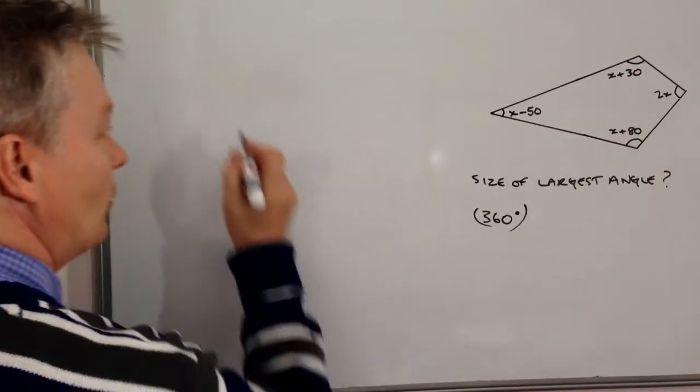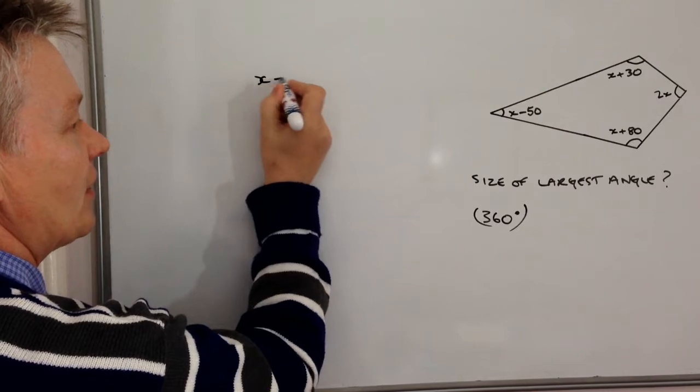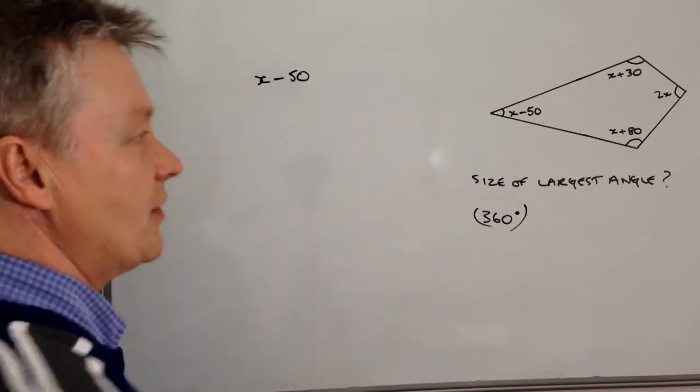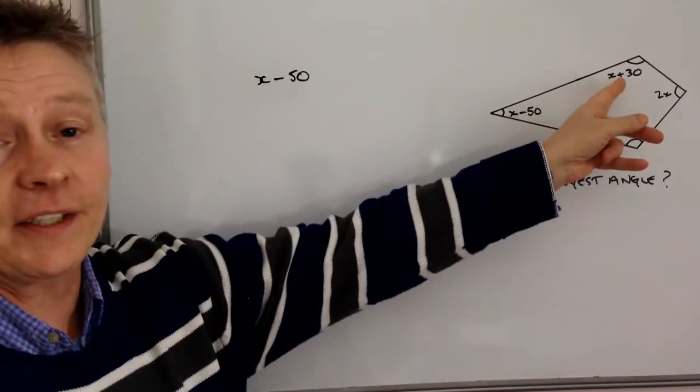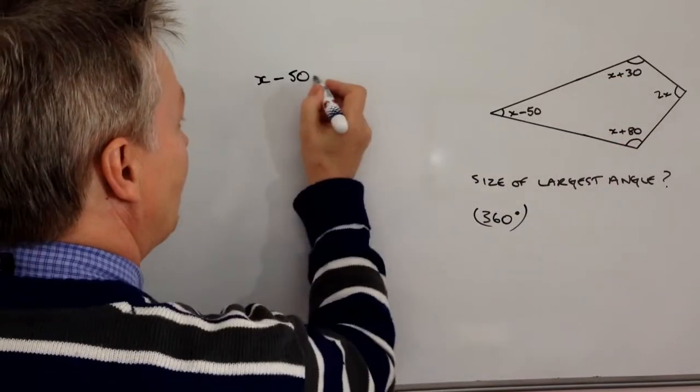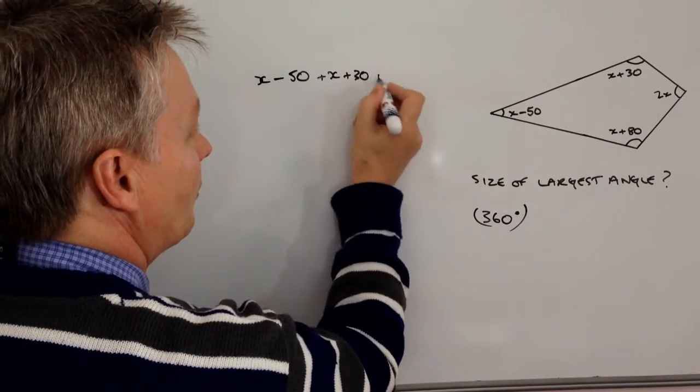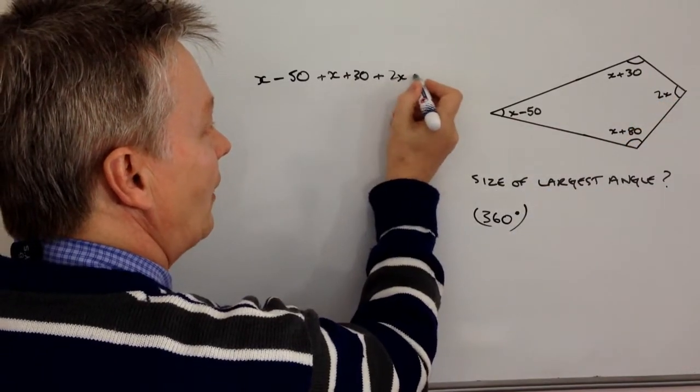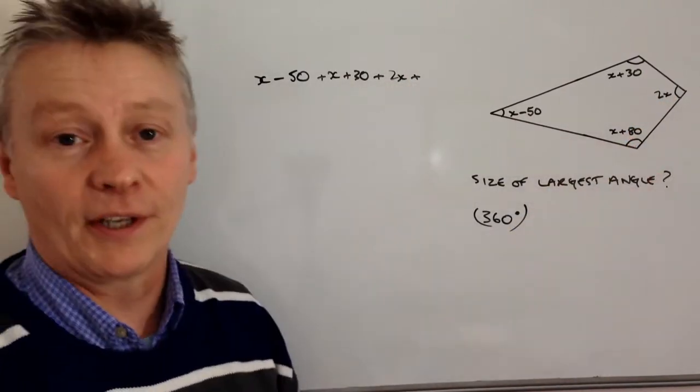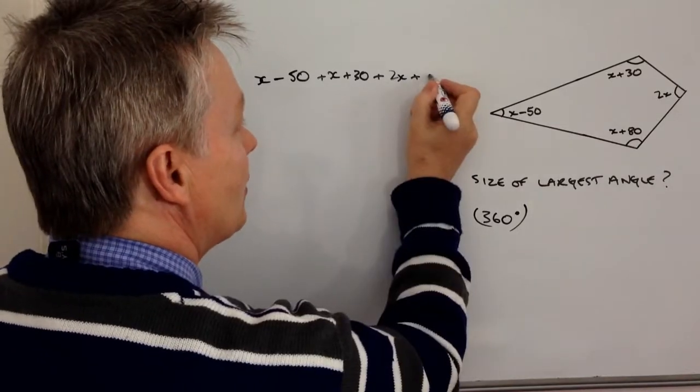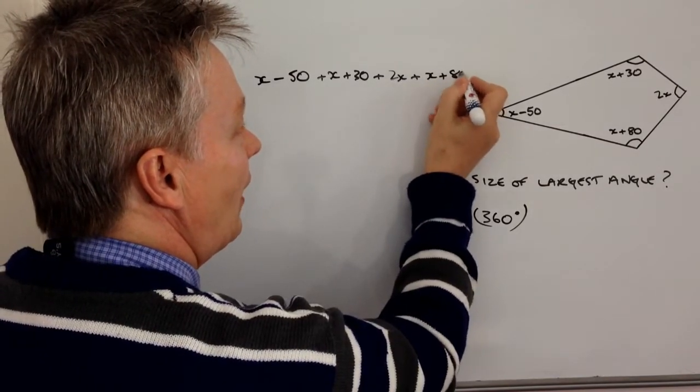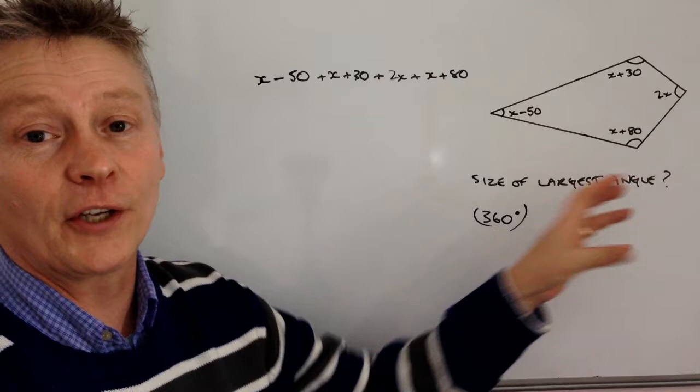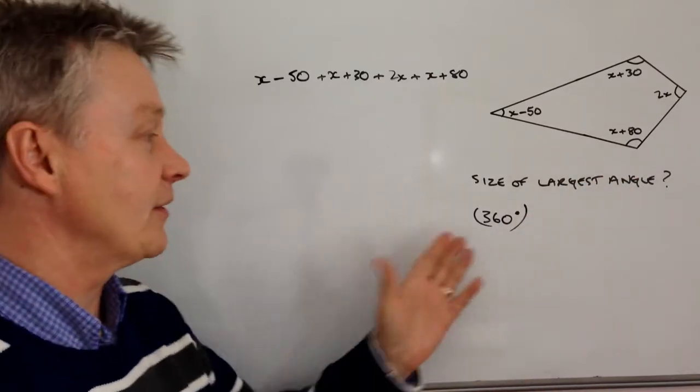So we'll do that and we'll write it something like this. So I've got X minus 50 is this angle here. I'm going to add it to X plus 30 plus X plus 30. Then I'm going to add that to 2X, which is there, and I'm going to add that to X plus 80, which is at the bottom there. And all of that added together should equal 360 degrees.